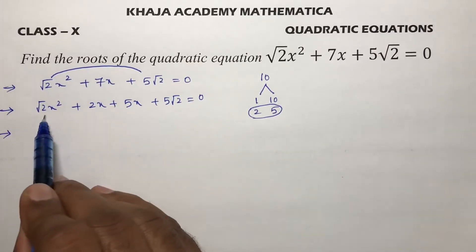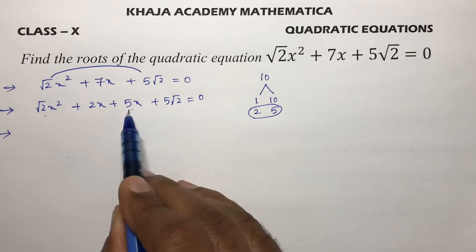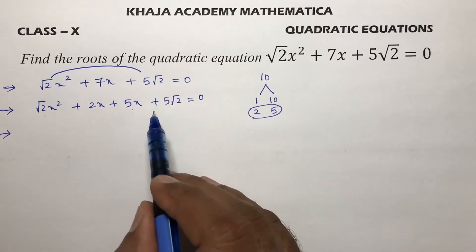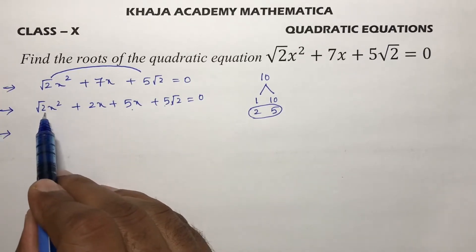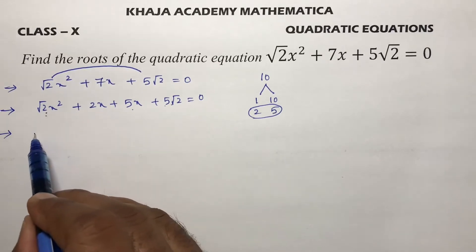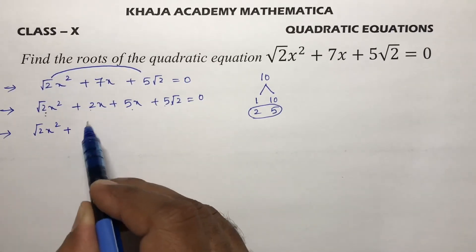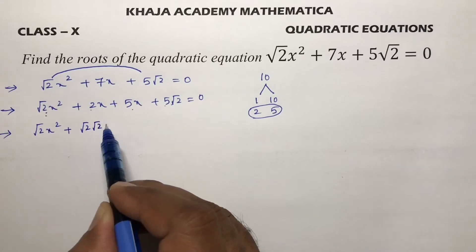Now, see out of these 4 terms, in these 2 terms it is easy for you to take common because 5 here, √2 is there.